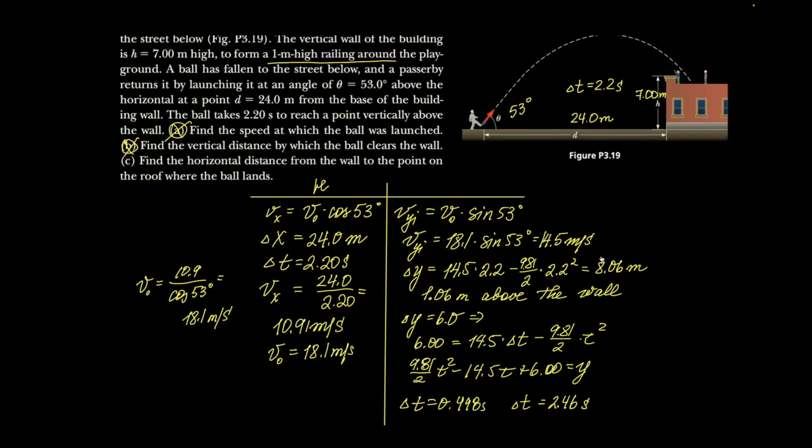Now, remember, before when we graphed for time, we got one negative answer and one positive answer. That was easy, because time could not be negative. We just picked the positive answer. Here, I have both of them positive. If you look at the trajectory, there are two points in time where our projectile is at 6 meters above the ground. Here is your 0.498, and here is your 2.46 seconds.